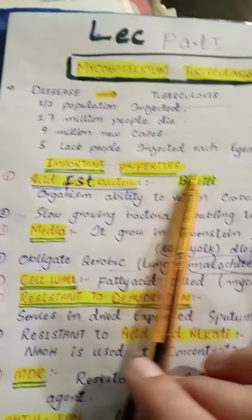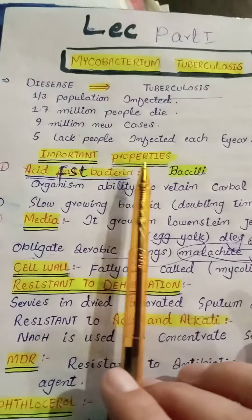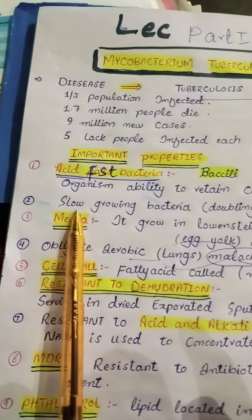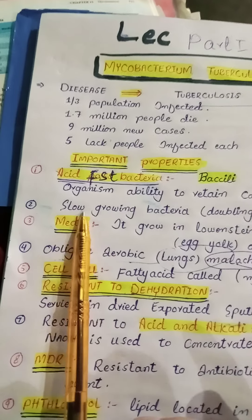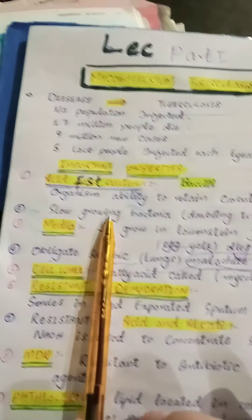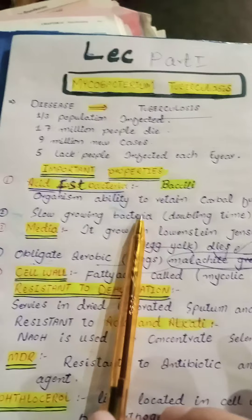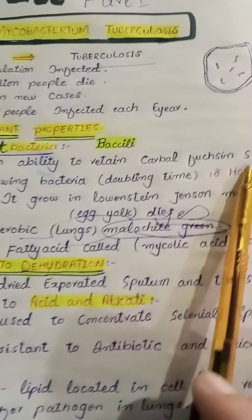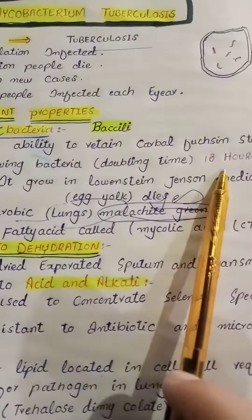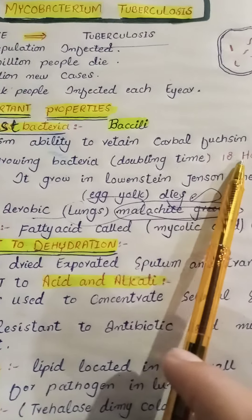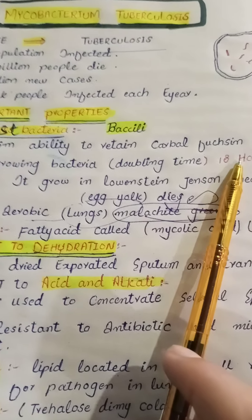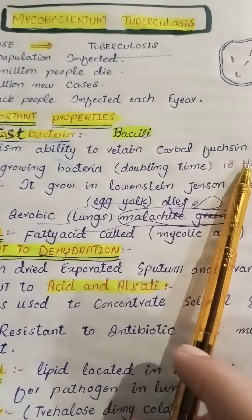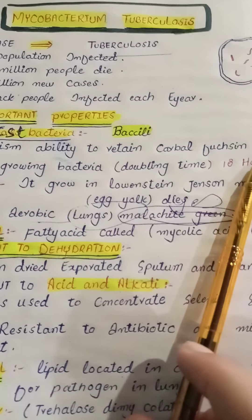Now the question arises: why is this bacteria acid-fast? We will discuss that. The second most important property is it is slow-growing bacteria. It takes about 18 hours to replicate. So you should hold the culture for 6 to 8 weeks before recording a result as negative.